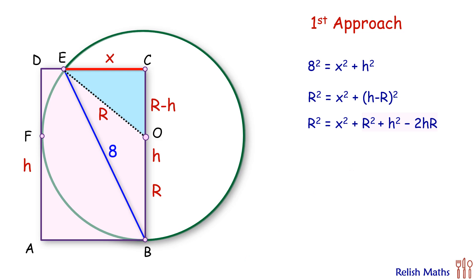Both sides, R² will get cancelled. Let's take this negative 2hR to the left side. So we get 2hR = x² + h². But we know x² + h² is nothing but 64. So let's replace this value by 64. Dividing both sides by 2, we get h times R is 32.